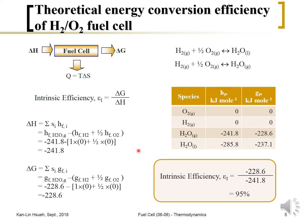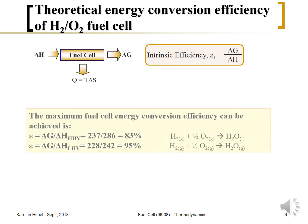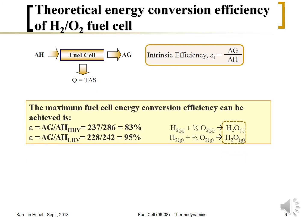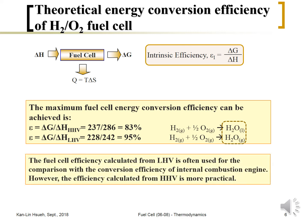That 95% is calculated based on gas-phase water as the product. For liquid-phase water, the result is about 83%. So the energy conversion efficiency depends on the phase of the reactants and products. For fuel cell comparisons, the future efficiency is usually referenced to the lower heating value (LHV), though in practice it is better to use the higher heating value (HHV) for comparison.